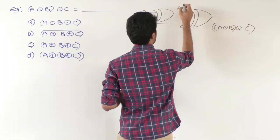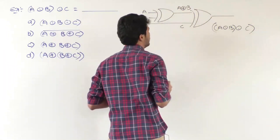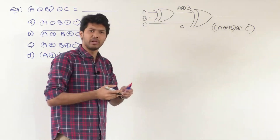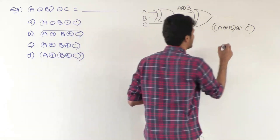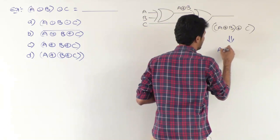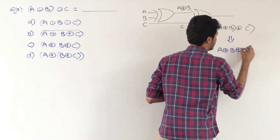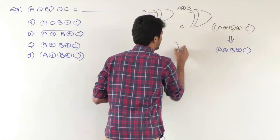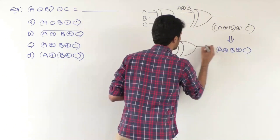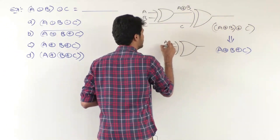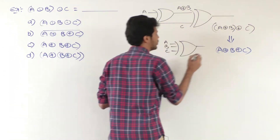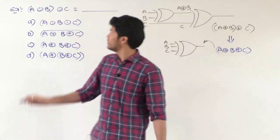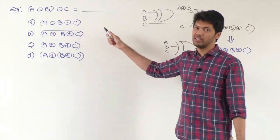After canceling both bubbles, what we have is A XOR B at the first gate. Then feeding into the second gate with C, we get A XOR B XOR C. As seen in the previous problem, this can be written as A XOR B XOR C, implemented by a three-input XOR gate with inputs A, B, C. So the output is A XOR B XOR C.